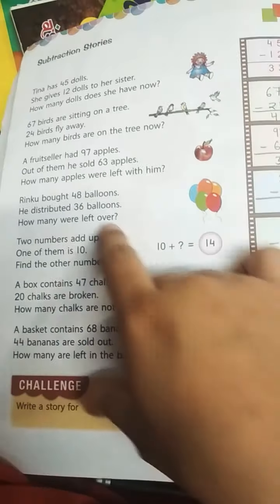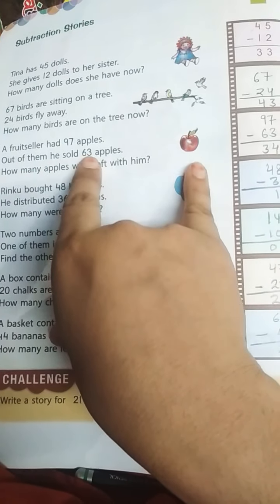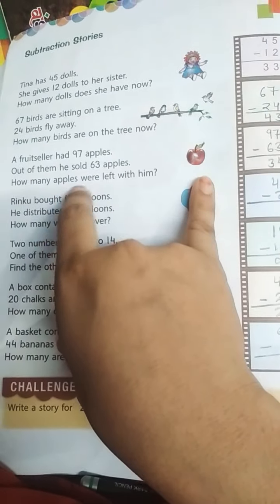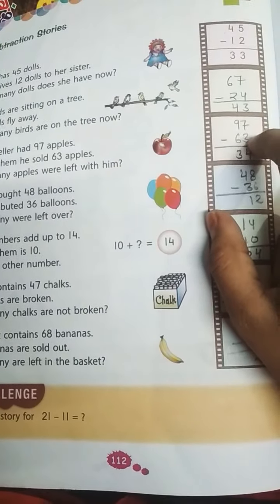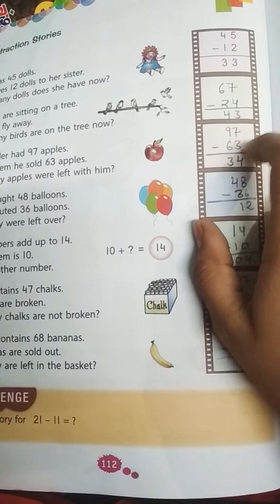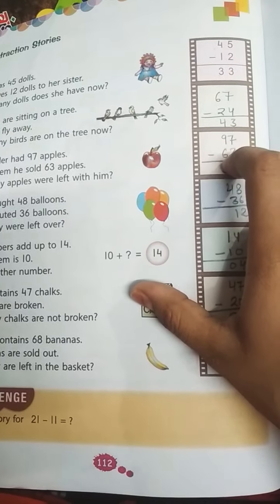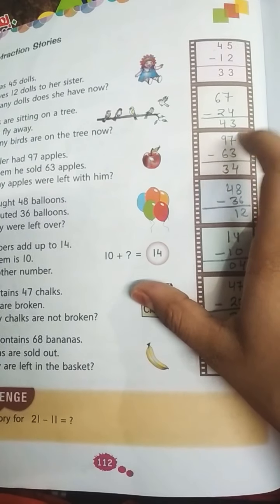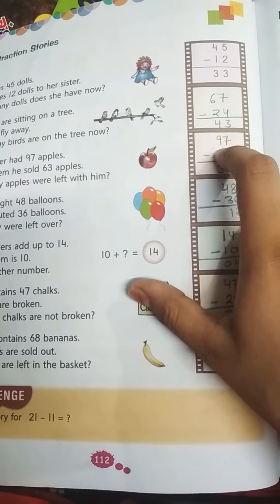A fruit seller had 97 apples. Out of them he sold 63 apples. How many apples were left with him? So 97 minus 63. 7 minus 3, you can count on your finger, there is 4. And 9 minus 6, you can count on your finger after 6: 7, 8, 9, so 3. Got it?